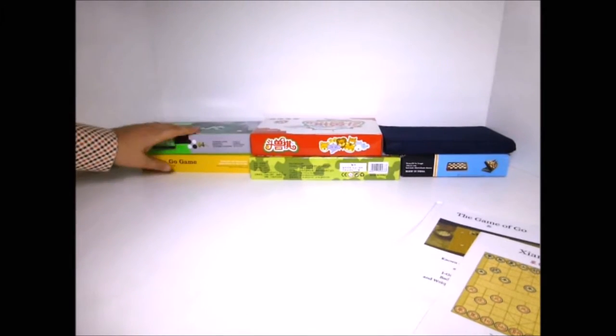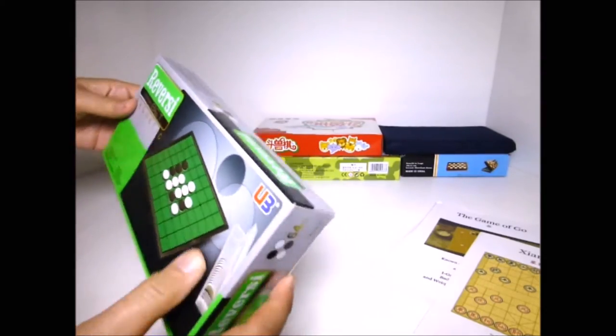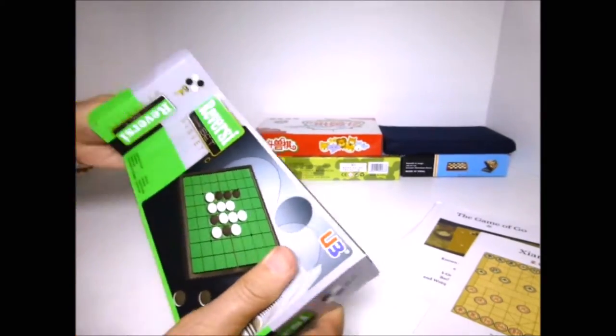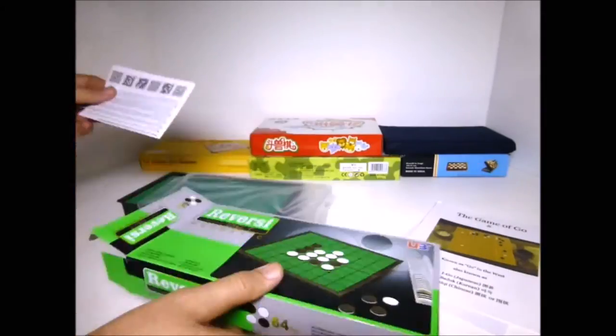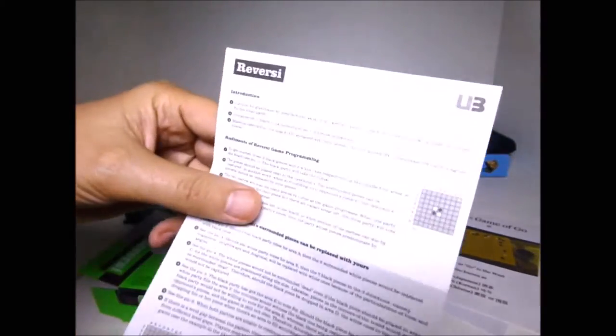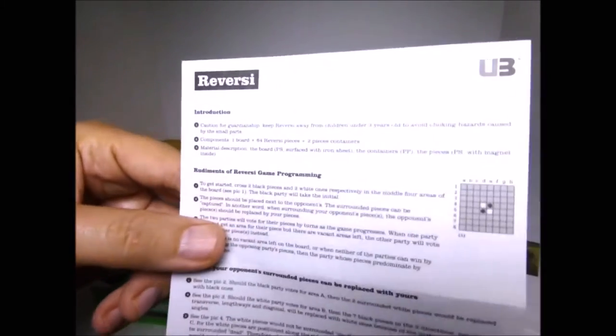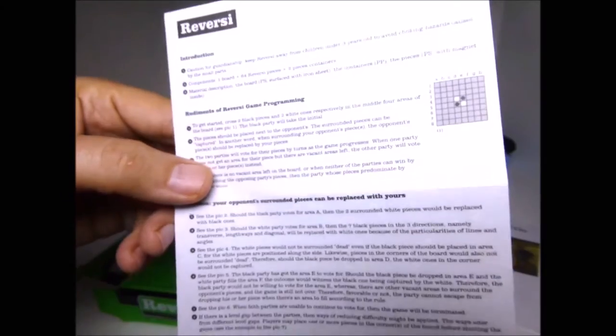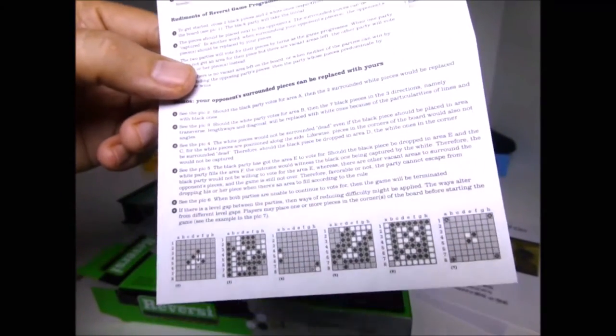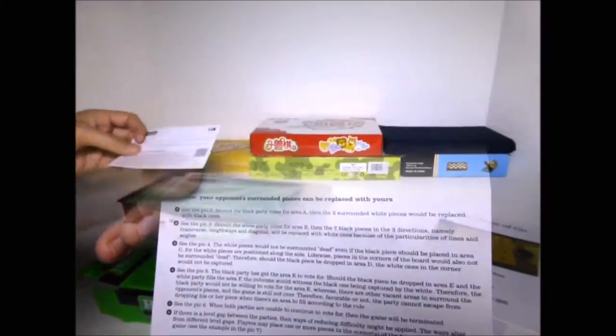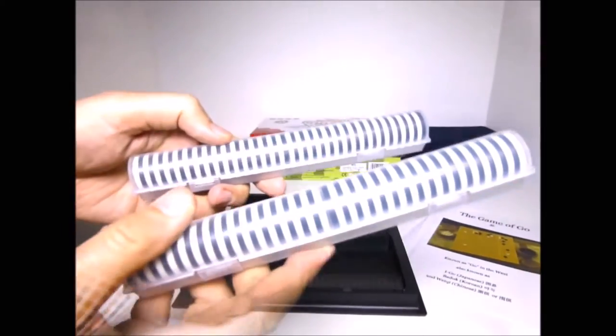This next game is Reversi. It's known as Othello because recently, in the last couple of decades, it was marketed as Othello. Here are the rules right here, but you don't really need that many words to understand the rules of this game. It's very simple to understand, and the strategies become very intriguing.